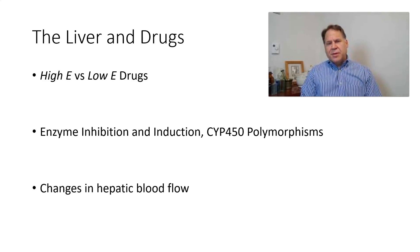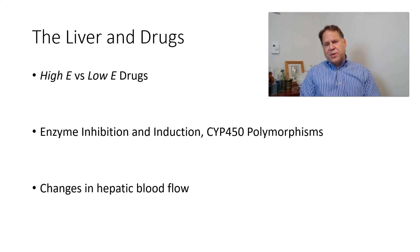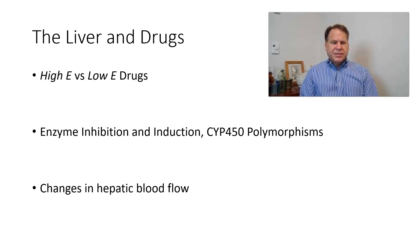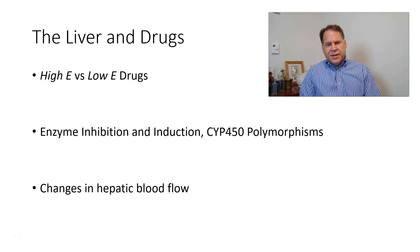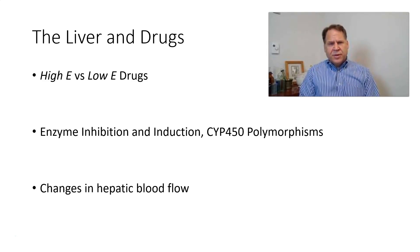Polymorphisms exist in P450 enzymes that would change the ability of the enzyme to function and therefore metabolize drug. So we can have a poor metabolizer phenotype, intermediate, extensive, or ultra-rapid — for example, for cytochrome P450 2D6. We also know that Q, hepatic blood flow, is an important factor for determining hepatic clearance. Changes in hepatic blood flow, such as we might see in chronic liver failure or heart failure, would certainly impact the ability of the liver to clear drug.